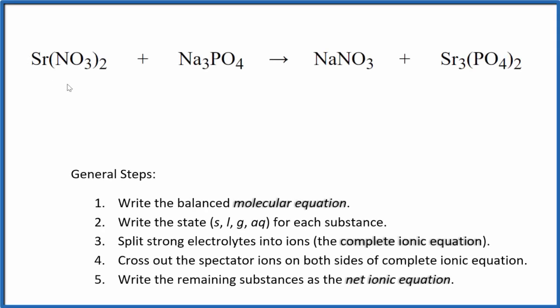Let's write the balanced net ionic equation for Sr(NO3)2 plus Na3PO4. We have strontium nitrate and then we have sodium phosphate. First thing we need to do with net ionic equations, we balance the molecular equation. This is the molecular equation.